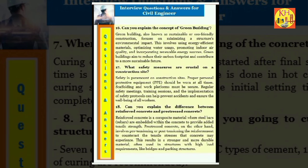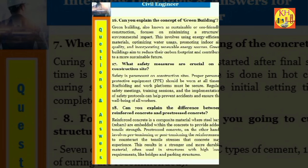Question 16: Can you explain the concept of green building? Green building, also known as sustainable or eco-friendly construction, focuses on minimizing a structure's environmental impact. This involves using energy efficient materials, optimizing water usage, promoting indoor air quality, and incorporating renewable energy sources. Green buildings aim to reduce their carbon footprint and contribute to a more sustainable future.